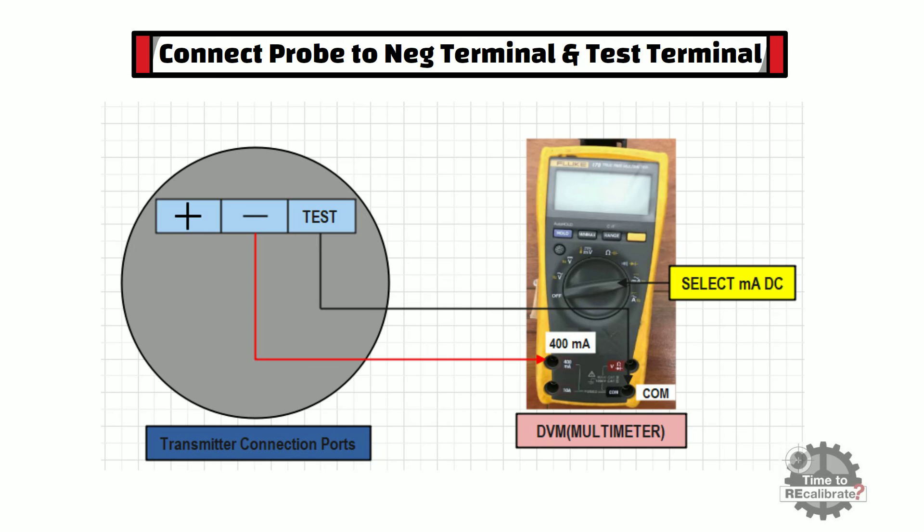In order to measure output current, we need to connect red probe to negative terminal of transmitter and common or black probe to test terminal.